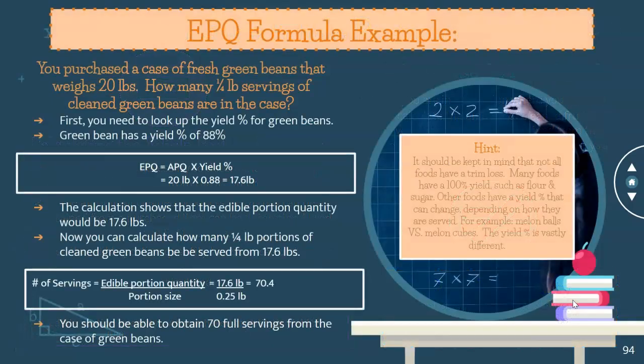Here's an example. You purchase a case of fresh green beans that weighs 20 pounds. How many one-quarter-pound servings of fresh clean beans are in the case? First, look up the yield percent for green beans in the yield percent universal guide — green beans have a universal yield percent of 88%. Apply it to the formula: 20 pounds times 0.88 equals 17.6 pounds, which is your edible portion quantity.